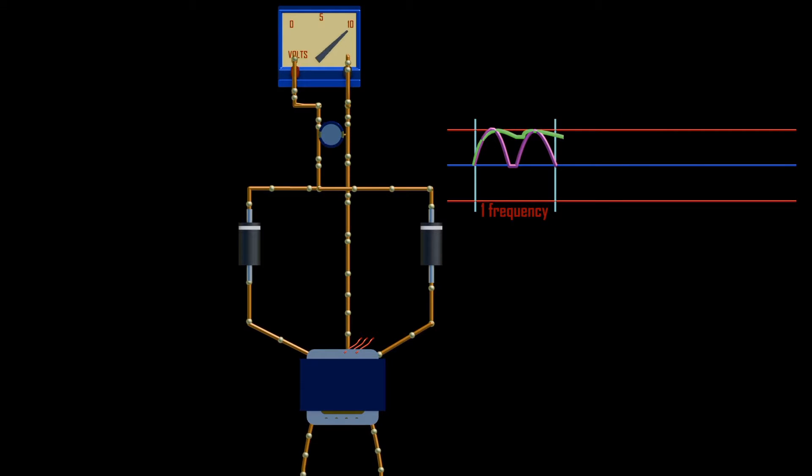In full-wave rectifiers, we can use two diodes, with the help of center-tap transformer to achieve full-wave rectification, which is bi-phase circuit rectifier.